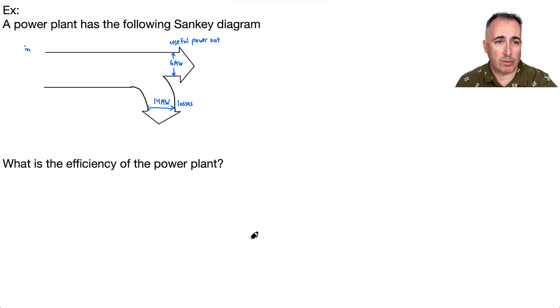Let's do an example. We have a power plant, and we're told that it has the following Sankey diagram. We're talking about power in this case, useful power out is six megawatts. We have losses of 14 megawatts. We don't know how much is in, but maybe we can actually figure that out. If we want to figure that out, this can just be six plus 14, then that's going to be 20 megawatts.